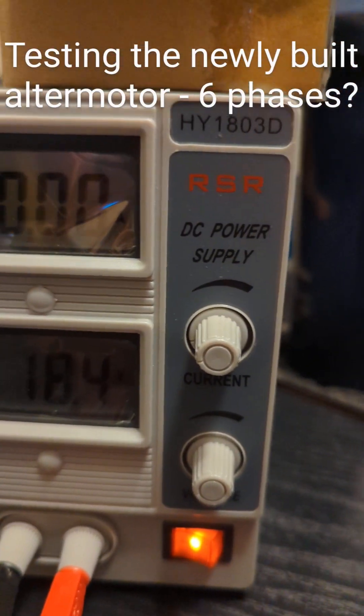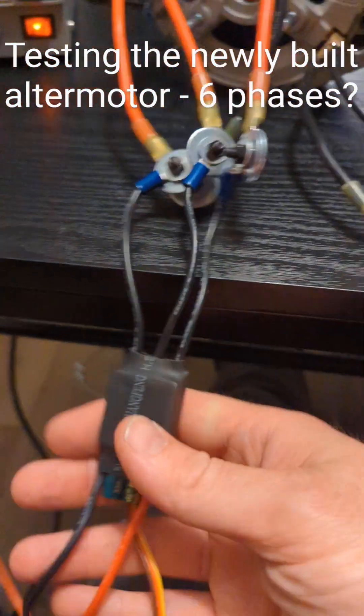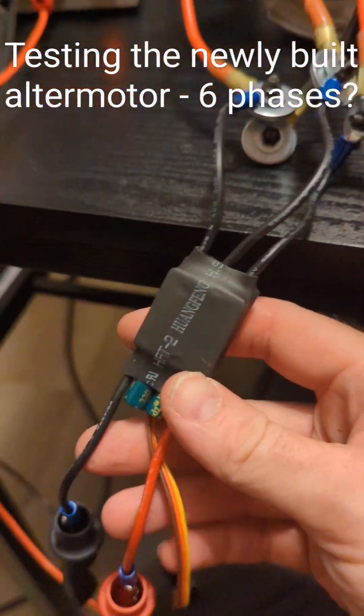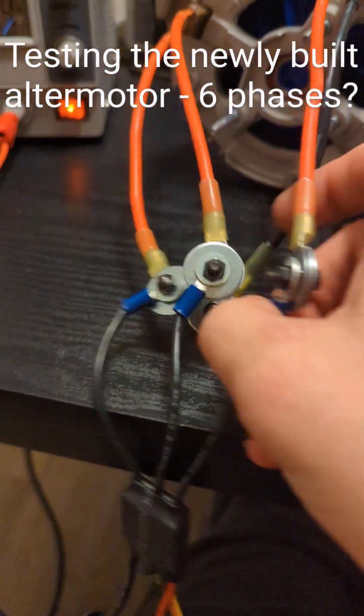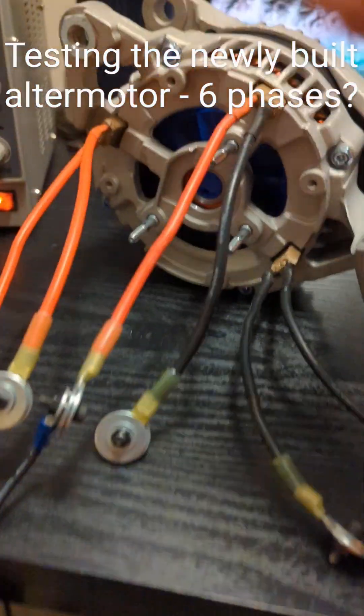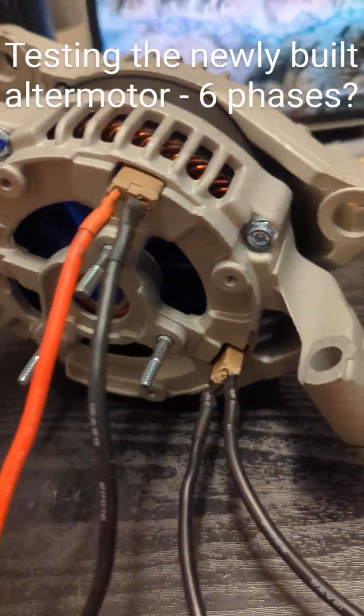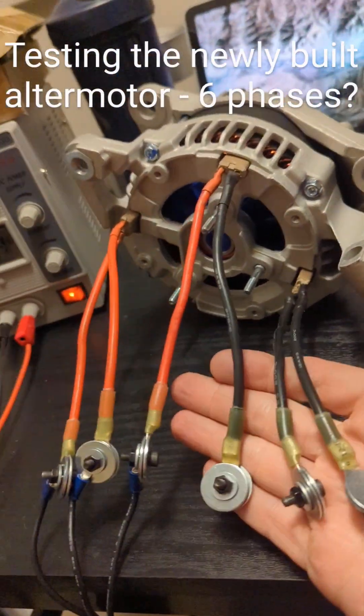The amperage is at its max, which is about two and a half. It is connected to this freshly speed controller, which is connected to three of the six leads coming out of this alternator.